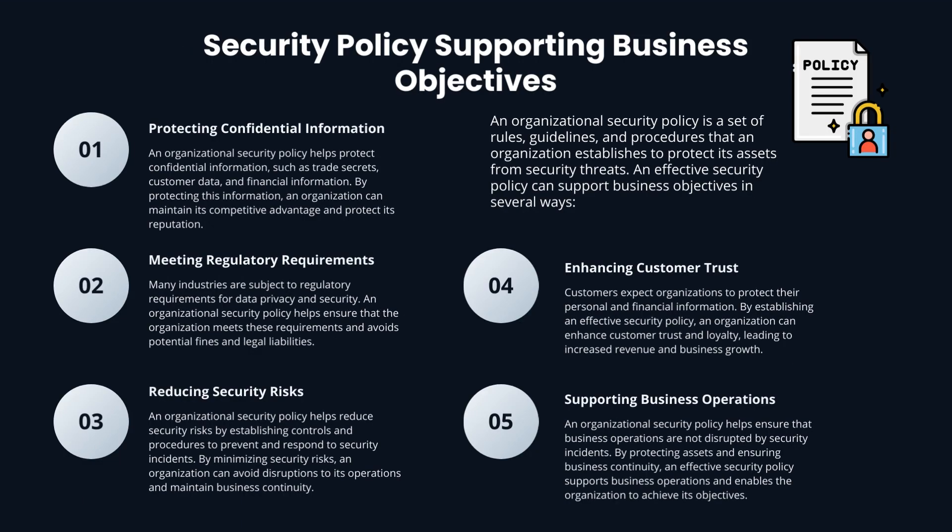Security policy supporting business objectives. An organizational security policy is a set of rules, guidelines, and procedures that an organization establishes to protect its assets from security threats. An effective security policy can support business objectives in five ways. The first is protecting confidential information: an organizational security policy helps protect confidential information such as trade secrets, customer data, and financial information.